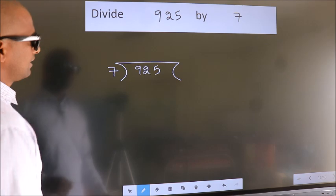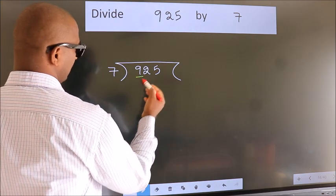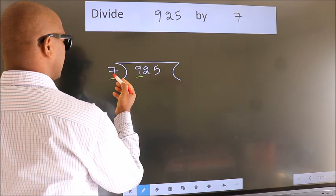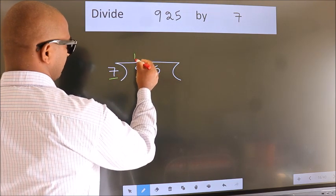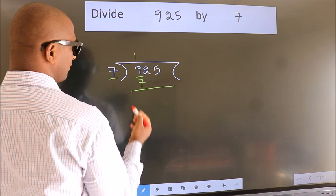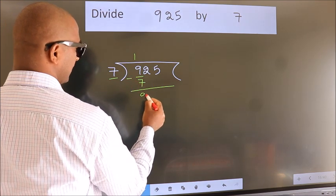Next, here we have 9, here 7. A number close to 9 in 7 table is 7 once 7. Now we should subtract. We get 2.